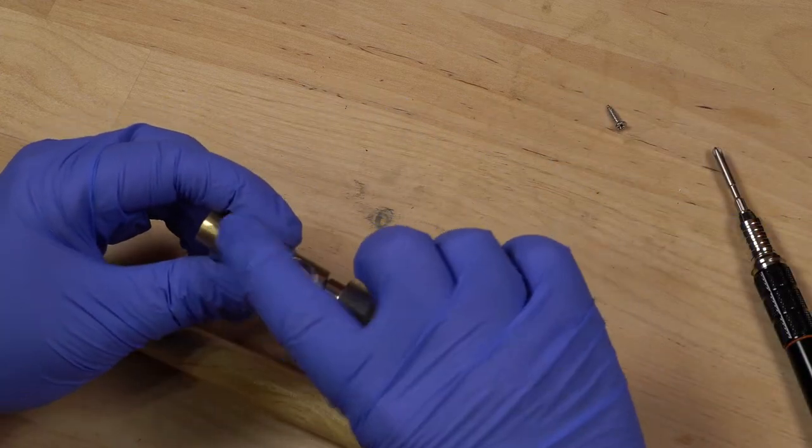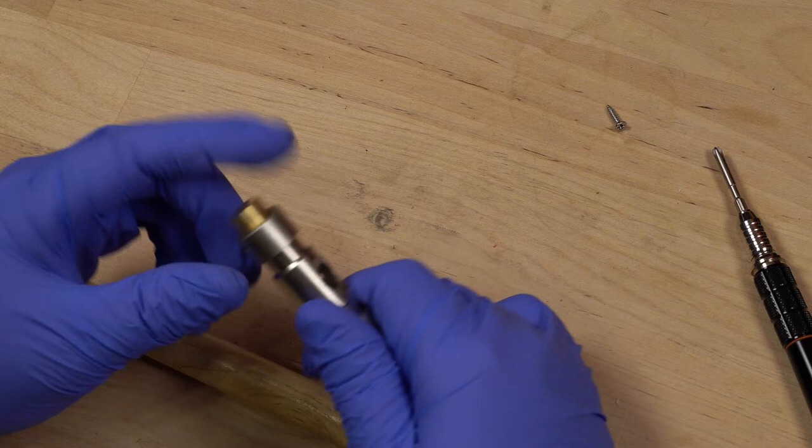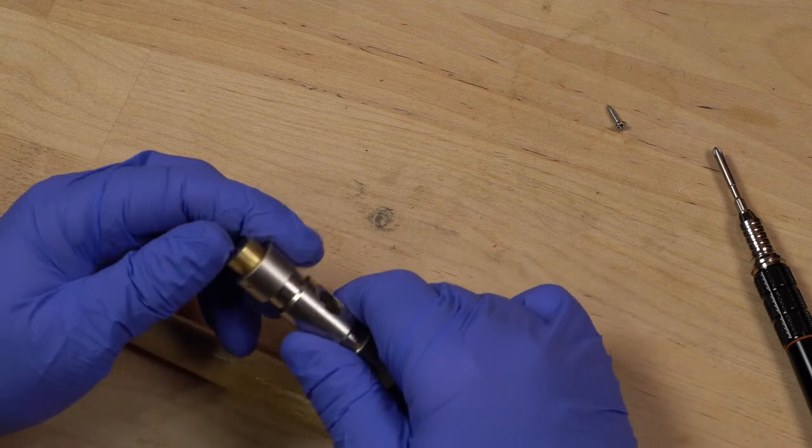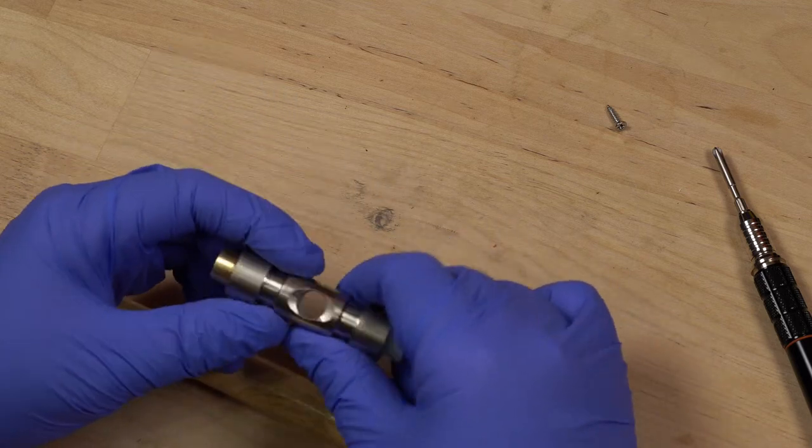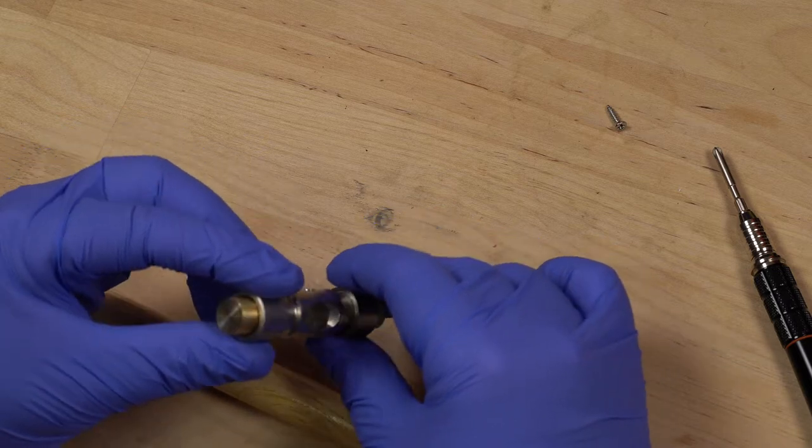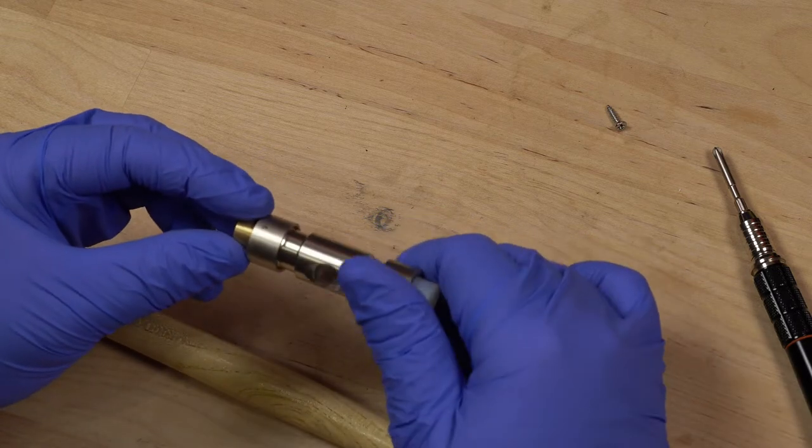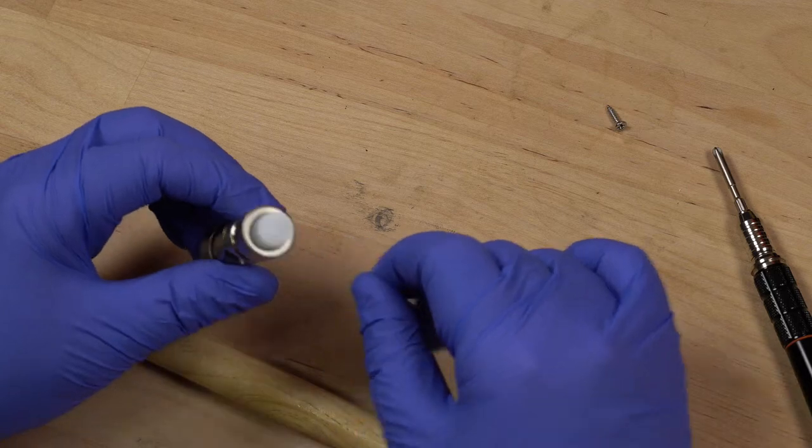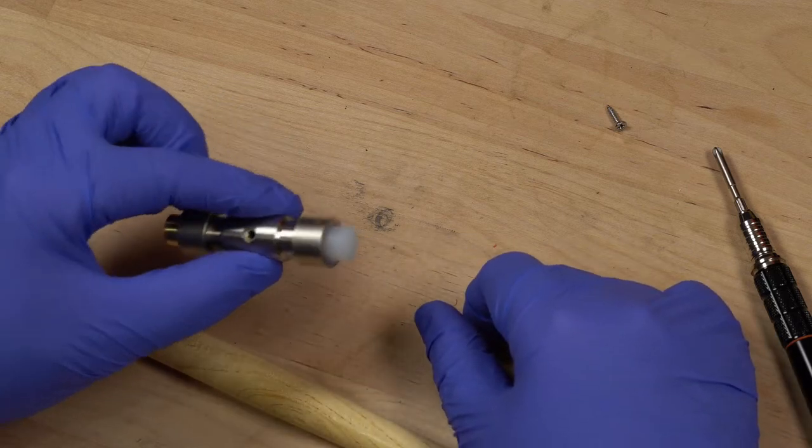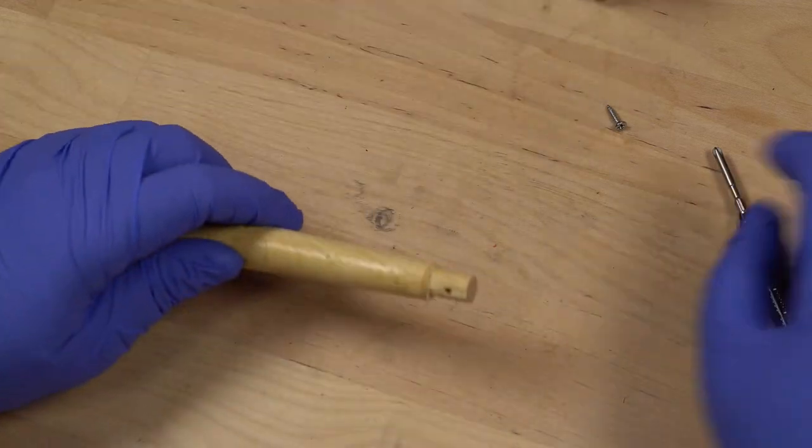Also these parts here unscrew and inside is an o-ring. Gives you a little bit more cushion. So if you ever need to replace these ends you can do that. You'd have to find them or get yourself a lathe and make them.